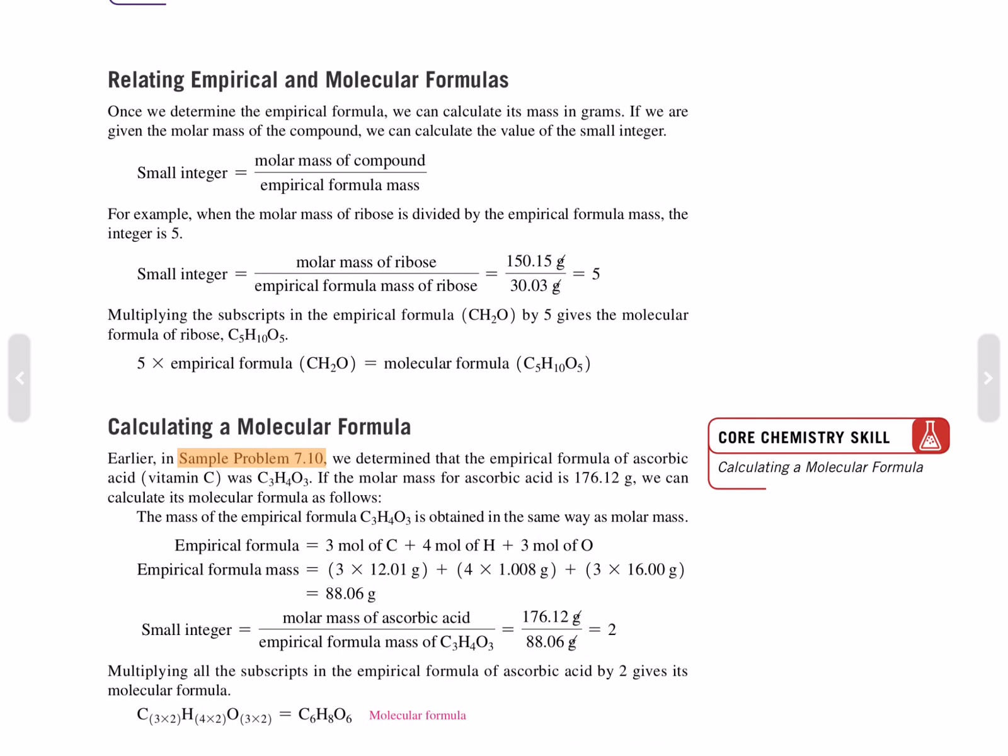Relating empirical and molecular formulas. Once we determine the empirical formula, we can calculate its mass in grams. If we are given the molar mass of a compound, we can calculate the value of the small integer. The small integer is the molar mass of a compound divided by the empirical formula mass. For example, when the molar mass of ribose is divided by the empirical formula mass, the integer is 5. Multiplying the subscripts in the empirical formula by 5 gives the molecular formula of ribose, C5H10O5.